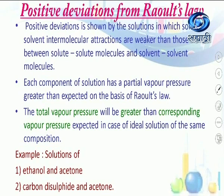Examples of solutions showing positive deviation: first, solutions of ethanol and acetone; second, carbon disulfide and acetone. These solutions show positive deviations from Raoult's law.